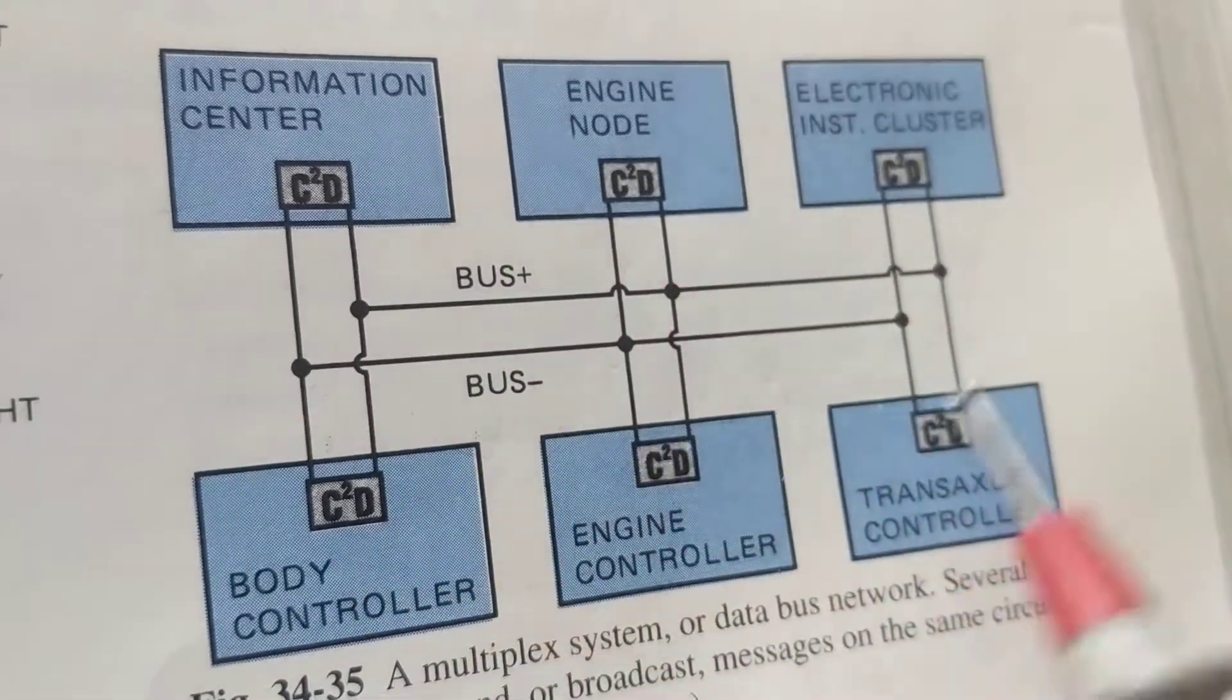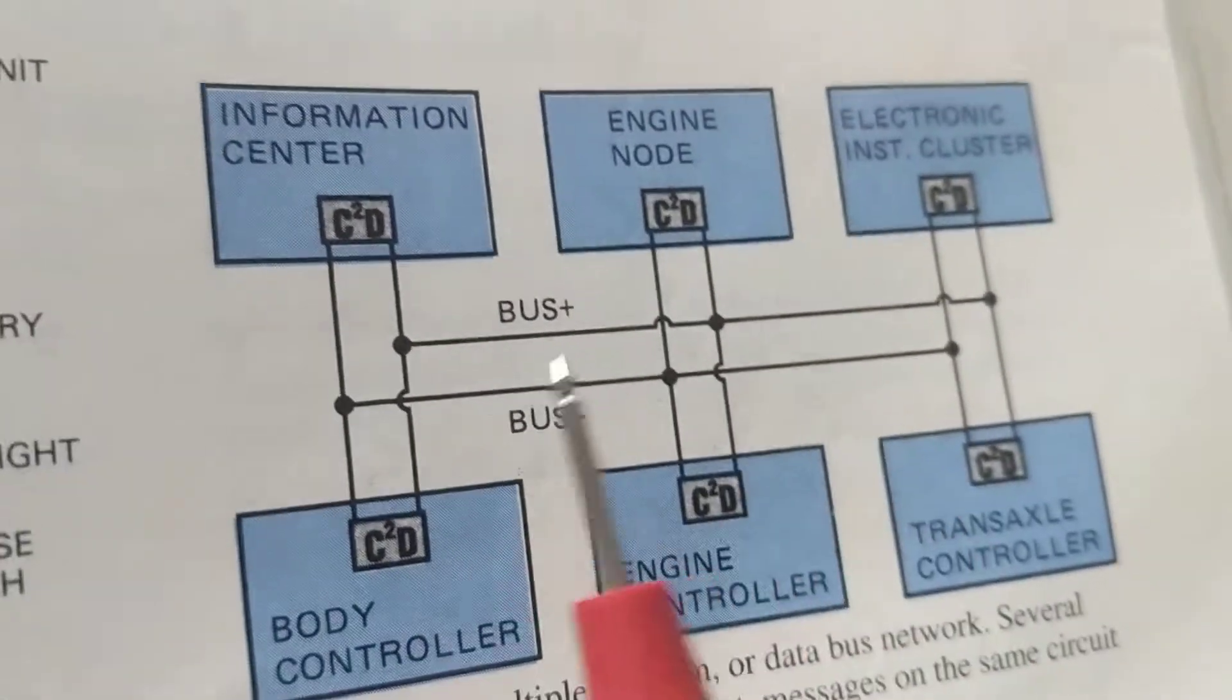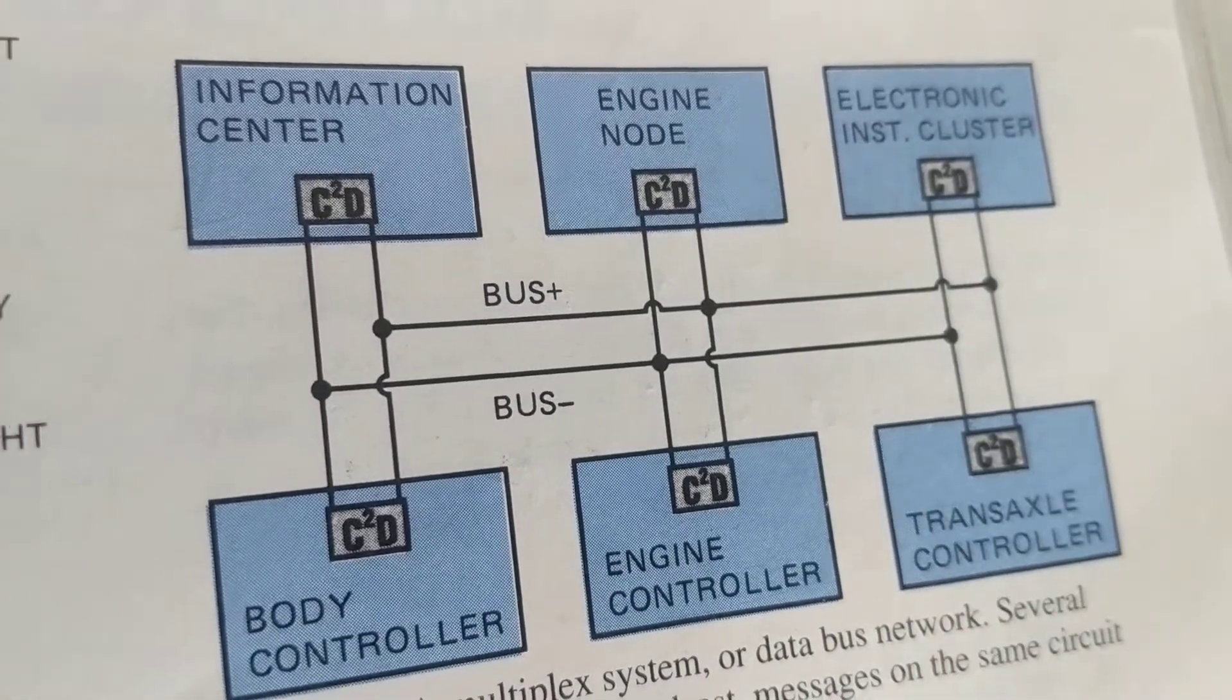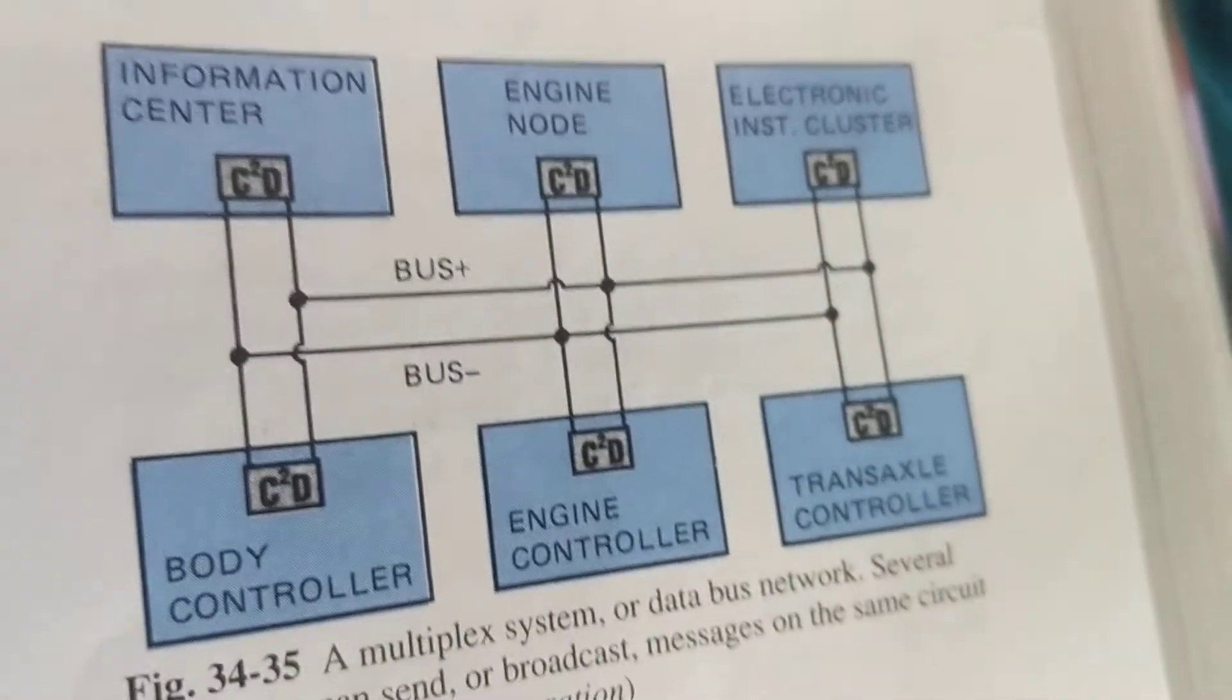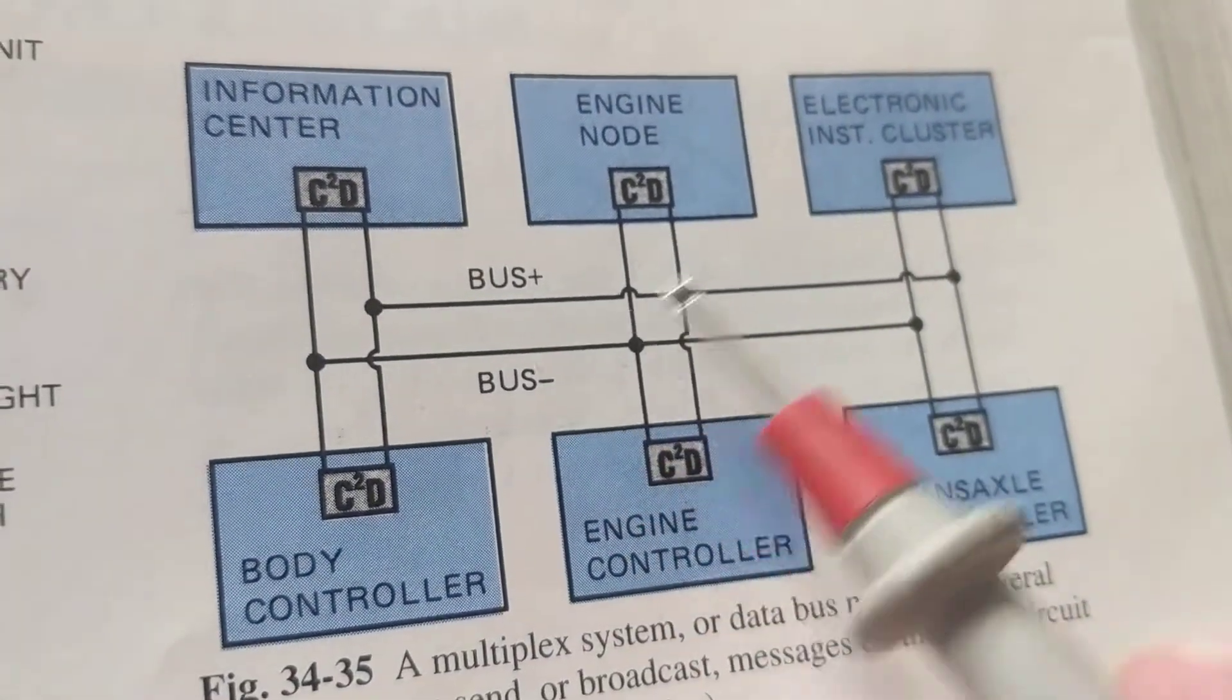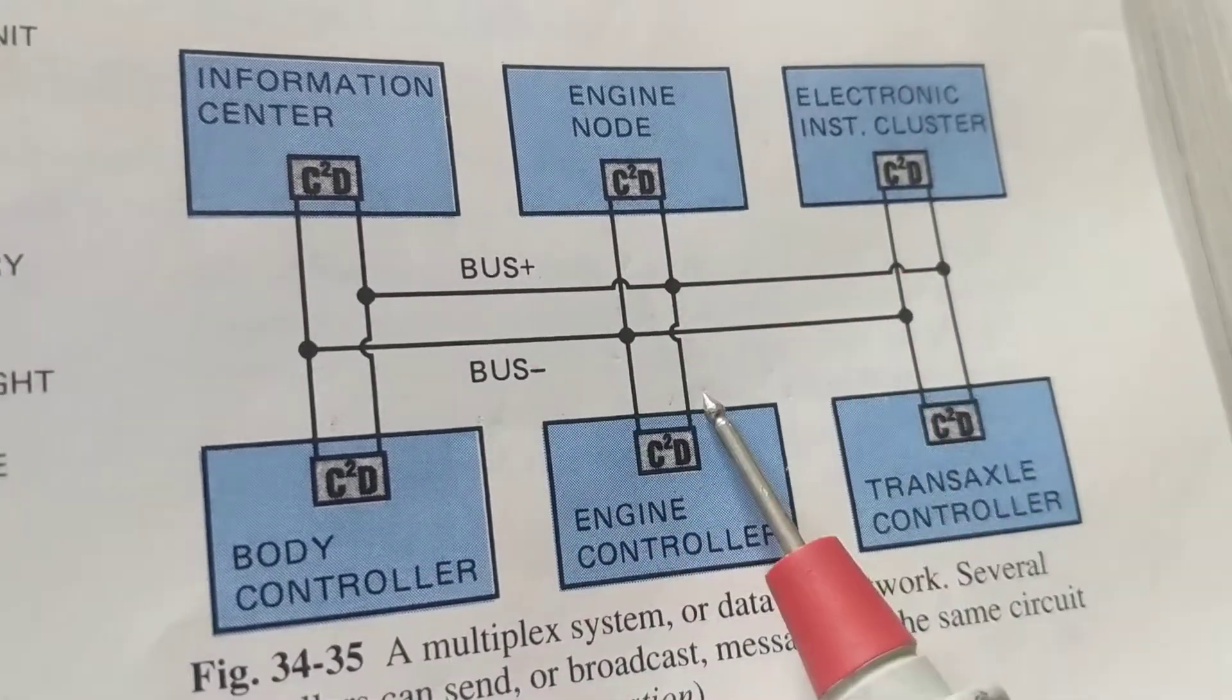This is the typical setup of a multiplex system. As you see over here, not changed over 20 years, not changed, except the protocol. Sometimes it's, obviously it's being advanced, it changes over time. But still, two bus lines talking in parallel, all in parallel, talking to each other.